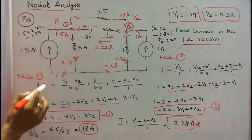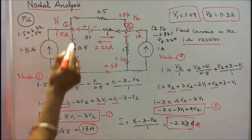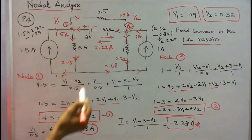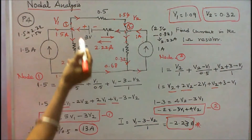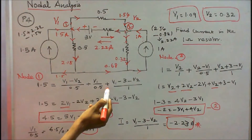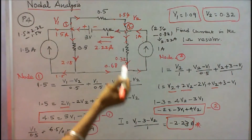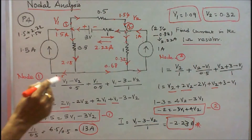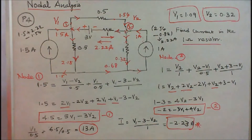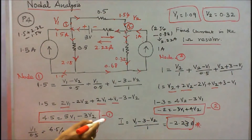At node 1: 1.5 equals (V1 minus V2) divided by 0.5, plus V1 divided by 0.5, plus (V1 minus 3 minus V2) by 1. Simplifying gives: 4.5 equals 5 V1 minus 3 V2. This is equation 1.